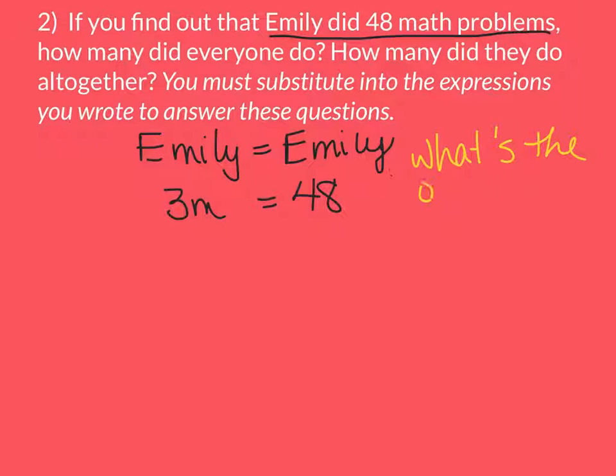So the opposite of multiplying by 3 is dividing by 3. Divide both sides by 3. These two cancel. I'm left with M equals, 3 goes into 4 once, 1 left over, 3 goes into 18, 6 times. So that tells me that M equals 16.